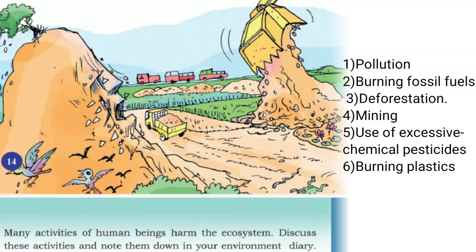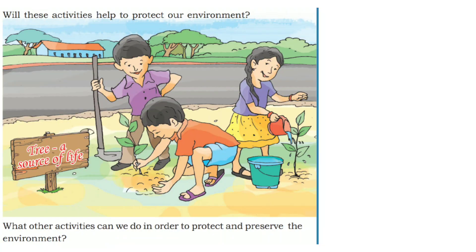Human activities harmful to the ecosystem include: pollution; burning of fossil fuels; deforestation — which means cutting trees in the forest; mining — which involves excavation in rocky hill areas; use of excessive chemical pesticides in agriculture for killing pests; and burning of plastics. These are the harmful activities of humans.